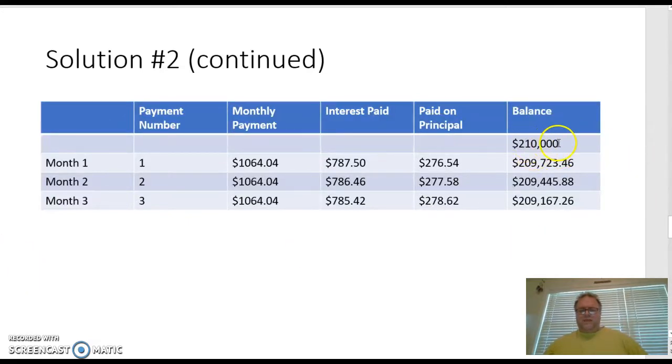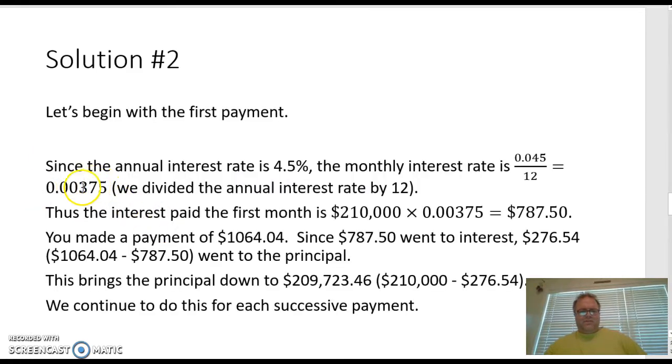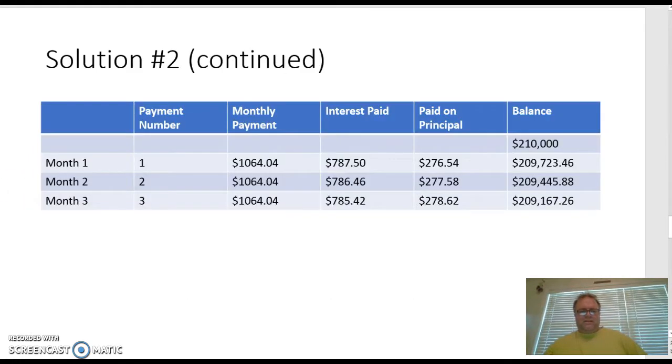We're going to use this same type of operation for each month. I did a little chart here. This is very similar to the one in the book. Here's our original balance. Month one, our total payment was this, this is how much went to interest, this is how much went to principal. You take this off of that and you get your new principal balance. The second month, we're doing the same thing. We're going to multiply this new balance by the 0.00375, our monthly interest rate.